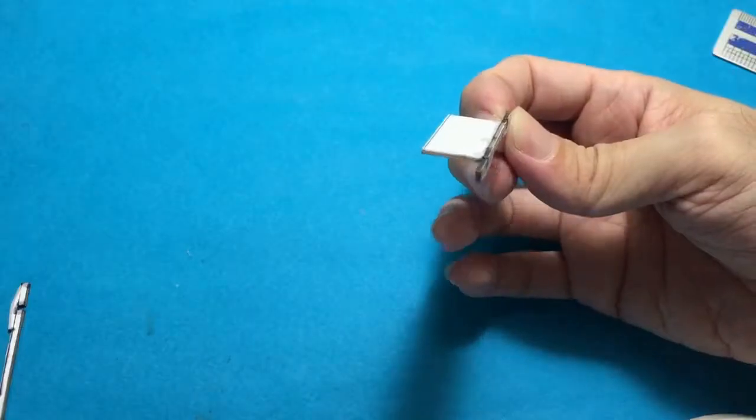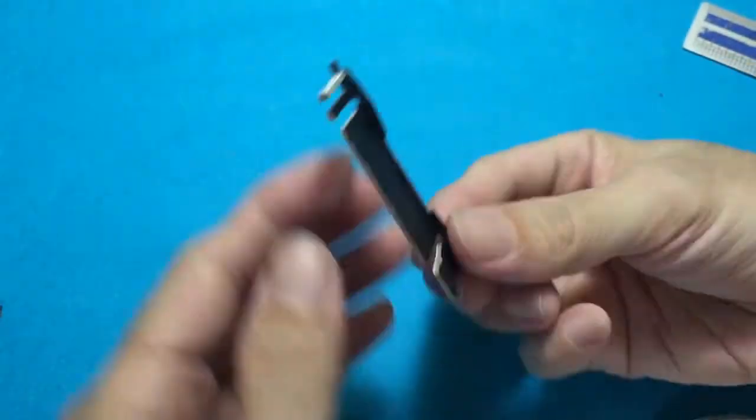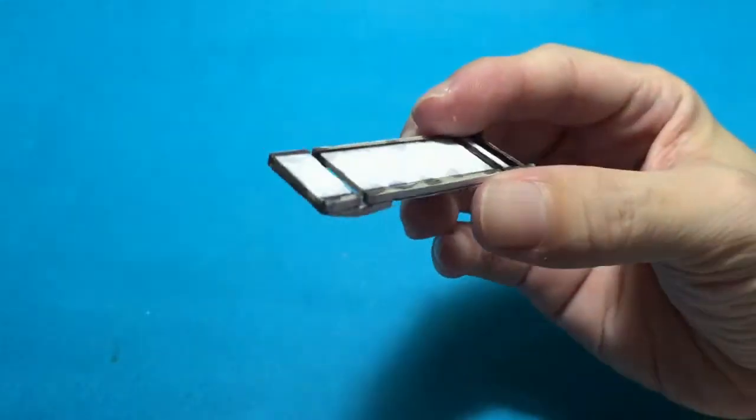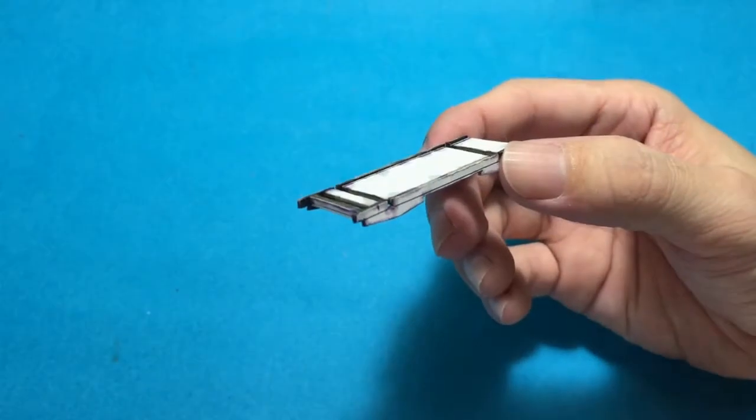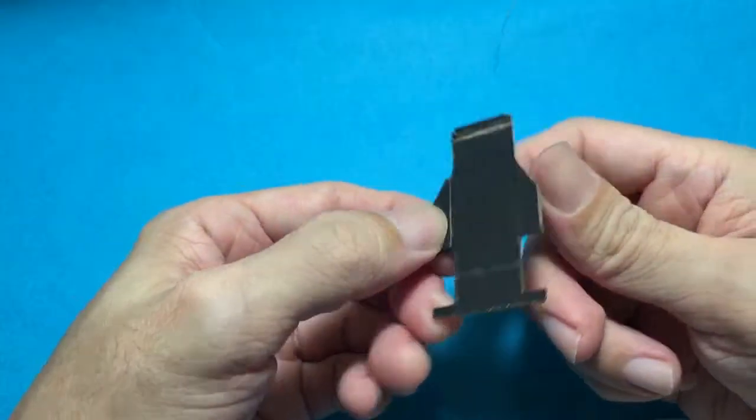I started assembling what will become the chassis, using CA glue to hold everything in place. Once that's completed, I moved on to construct the floor panel.